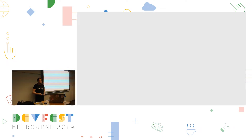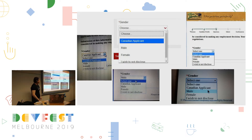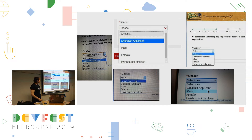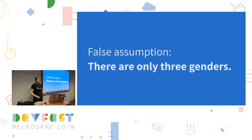And those three genders — of course everyone knows — are male, female, and Canadian African. But that's not right either, is it? There's definitely something wrong there. So that's also a false assumption. There are not only three genders. Canadian African is not in fact a gender at all, as far as I'm aware.